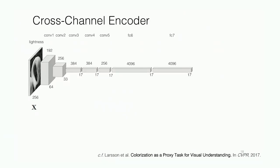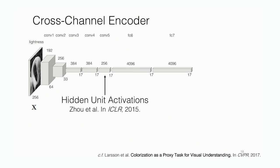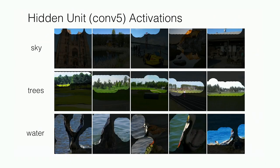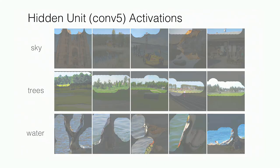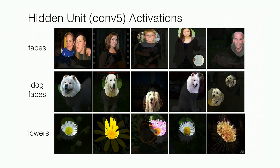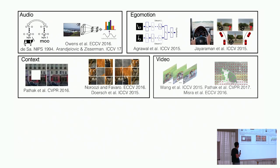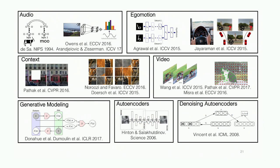We used a visualization technique from Zeiler et al. to qualitatively look at this, visualizing which image patches maximally stimulate certain hidden units. We see units corresponding to stuff categories like sky, trees, and water, and other units corresponding to thing categories such as faces, dog faces, and flowers. This type of learning — predicting raw data from other raw data — is called self-supervised learning. There's been a big flurry of activity here recently. An older reference by Virginia DeSa in NIPS 94 showed that if you associate raw pixels of a cow with the raw audio waveform of 'moo,' you've presumably learned something about how the natural world works. More modern work by Owens, Doersch's group, and others uses cues like ego motion, contextual cues, and video — all under the branch of self-supervised learning.